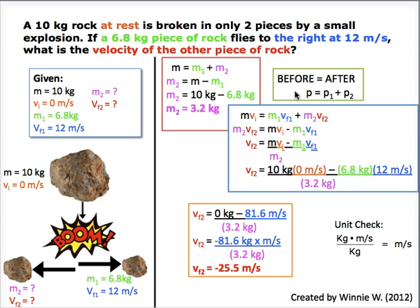Shown in the green box is the important law of the conservation of momentum, where the momentum before the explosion has to equal the momentum after the explosion. In the blue box, we can see how we're carefully isolating the variable of the final velocity of the second mass.